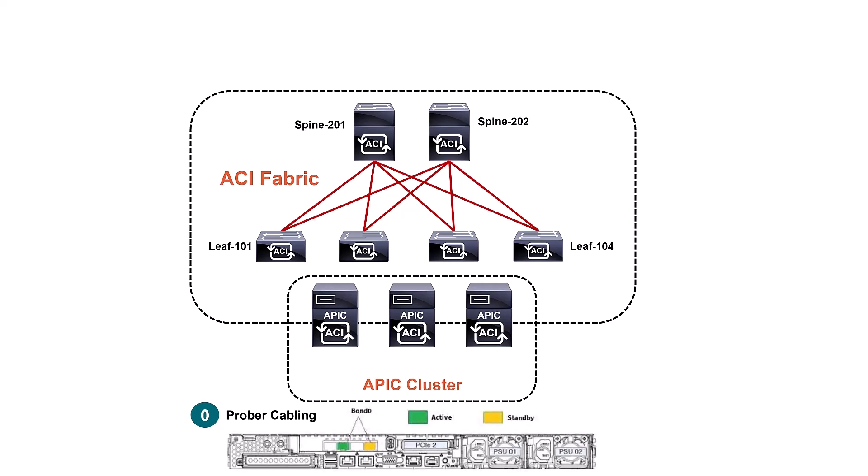Here's what the APIC looks like from the rear. It has something called the bond zero line card, which is a bunch of ports. Bond zero has four ports — I'll number them one, two, three, and four. The bond zero line card is used mainly to connect your APIC to the leaf switches. Leaves and APICs communicate through these bond zero interfaces. You only need two interfaces: one active (shown in green) and one standby.